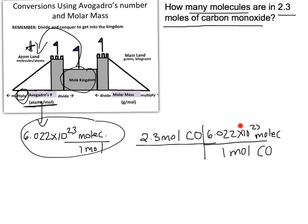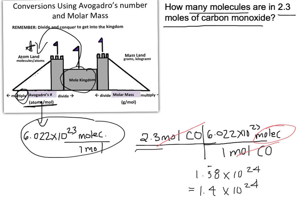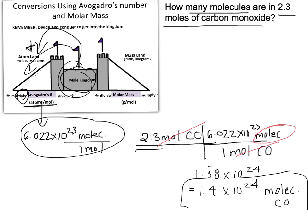We're going to multiply by the numbers on the top and divide by whatever's on the bottom. That gives us 1.38 times 10 to the 24th. We have two significant figures in our given number, so our final answer is 1.4 times 10 to the 24th. We also need to do unit evaluation: moles of carbon monoxide and moles of carbon monoxide cancel, so molecules of CO is what we're left with. That's our final answer — we've converted from moles to molecules.